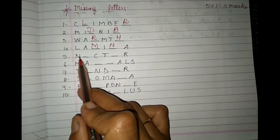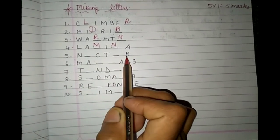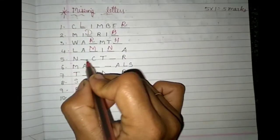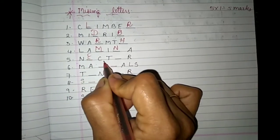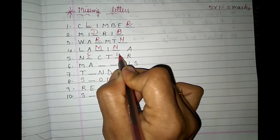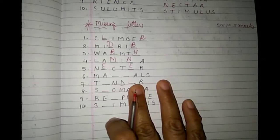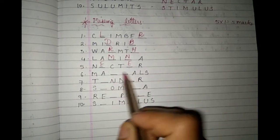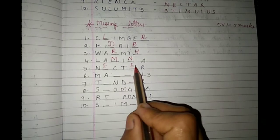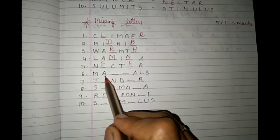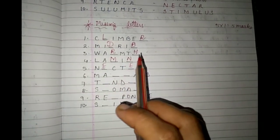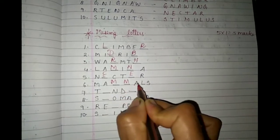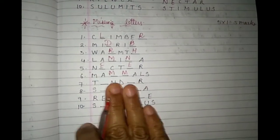Fifth one: N-dash-C-T-dash-R. In both blanks there will be the same alphabet. N-E-C-T-E-R — nectar. Sixth one: M-A-dash-dash-A-L-S. Just as in the previous one, here also the same letter appears in both blanks: M-A-M-M-A-L-S. What does it become? Mammals.